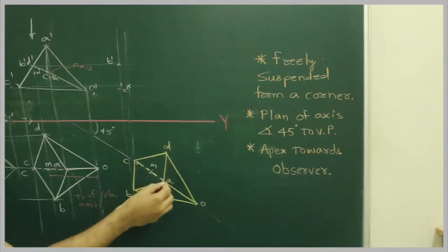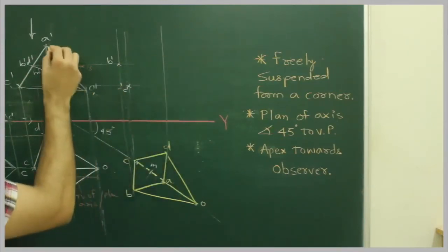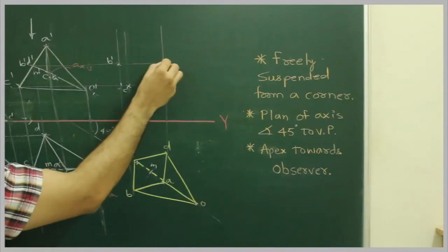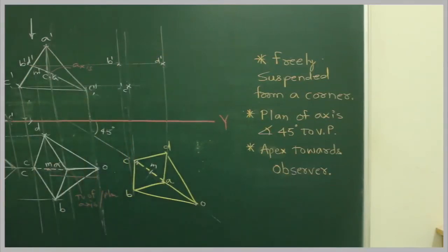Then you extend point D from here, D from here, you get D dash.